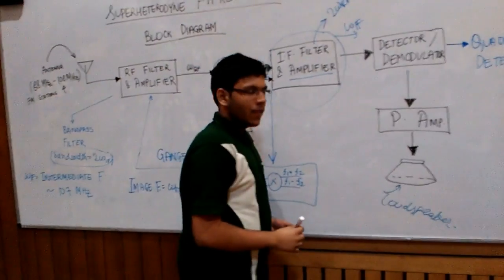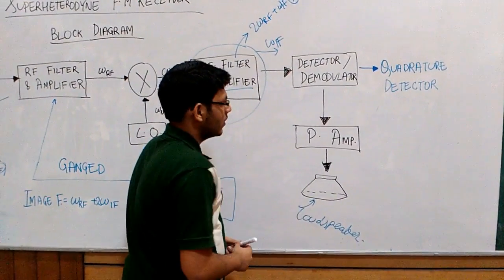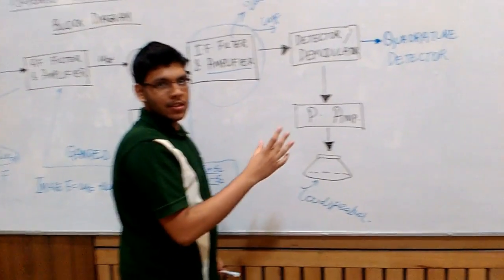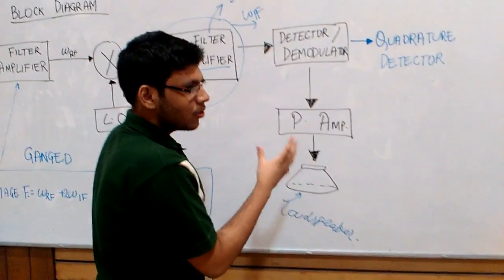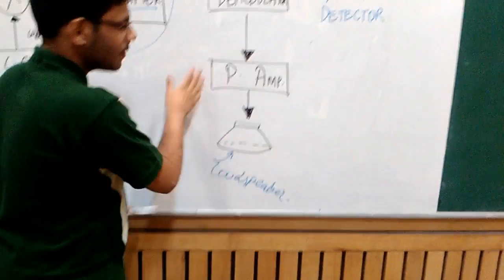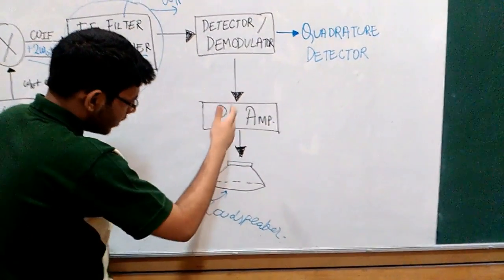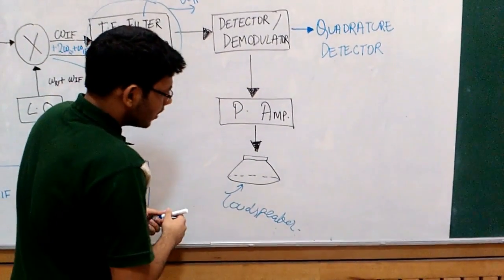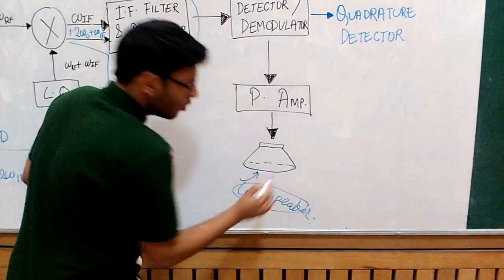And then comes the final stage that is power amplifier. Actually what happens after demodulation, the strength of the audio signal, the original signal becomes very low. And that is not sufficient to drive other audio devices. So it is passed through a power amplifier which in return amplifies the intensity to that extent so that it drives loudspeakers and other audio devices.